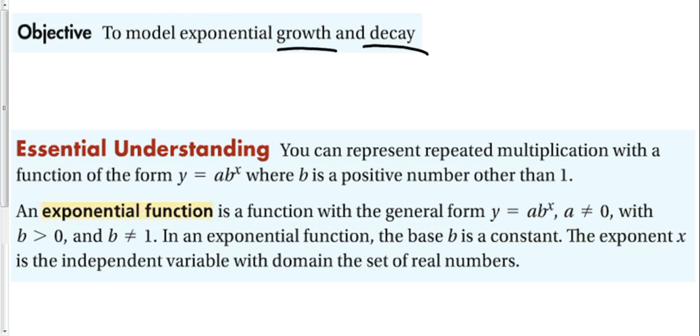Growth is just like it sounds - something that's going up. Meanwhile, decay is going to be something that's going down. Our essential understanding is you can represent repeated multiplication with the function of the form y equals a b to the x. Here's the important part: the x, the variable, is in the exponent. That is what makes it an exponential function. And b, of course, must be a positive number other than 1, or else none of this works.